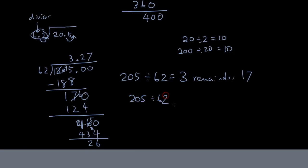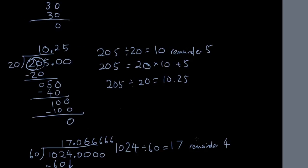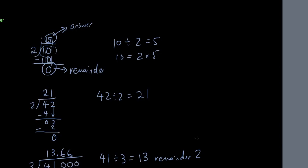So 205 divided by 62 equals 3.27 to one decimal place — I'm rounding this off. I'm looking at the number after the first decimal digit: if that number is 5 or bigger, I round up. Since 7 is 5 or bigger, I round up, giving 3.3 to one decimal place. That's how you divide numbers with decimal points.